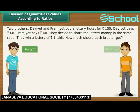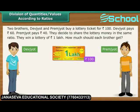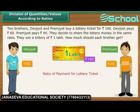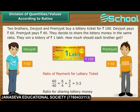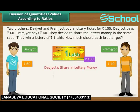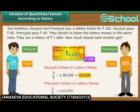Two brothers, Devjodh and Premjodh, buy a lottery ticket for Rs. 100. Devjodh pays Rs. 60 and Premjodh pays Rs. 40. They decide to share the lottery money in the same ratio. They win a lottery of Rs. 1 lakh. The ratio of their payments is 3 is to 2. Out of every Rs. 5, Rs. 3 will go to Devjodh and Rs. 2 will go to Premjodh. Devjodh's share in the lottery of Rs. 1 lakh is Rs. 60,000, and Premjodh's share is Rs. 40,000.